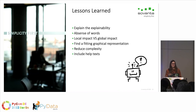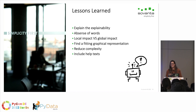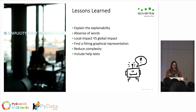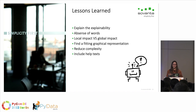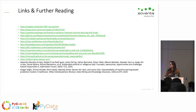My lessons learned: you have to really think about how to explain the explainability. It's not enough to just calculate the values — you have to explain to the customer what these values mean, and that's a greater challenge than just calculating them. How do you present it? How do you make it understandable? Also, how do you display absent words — do you even open that box? You have to find a fitting representation, include help texts for the user, and really reduce complexity to what the user actually needs to know about the prediction.